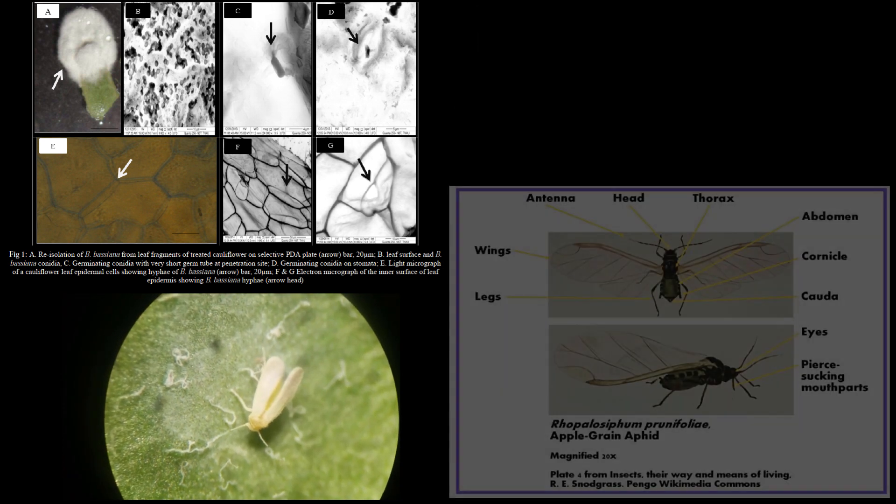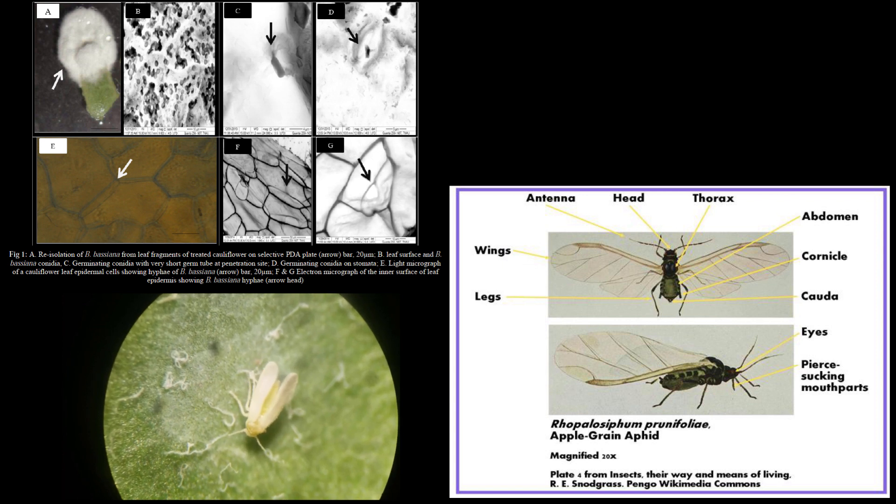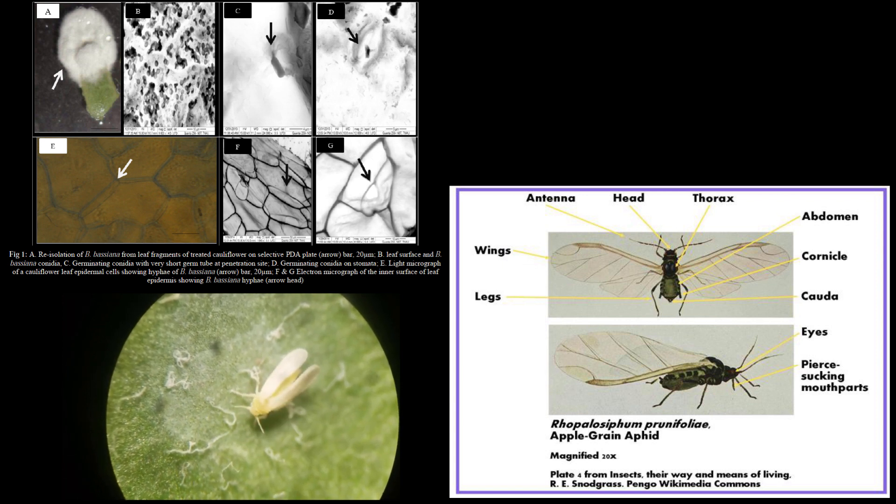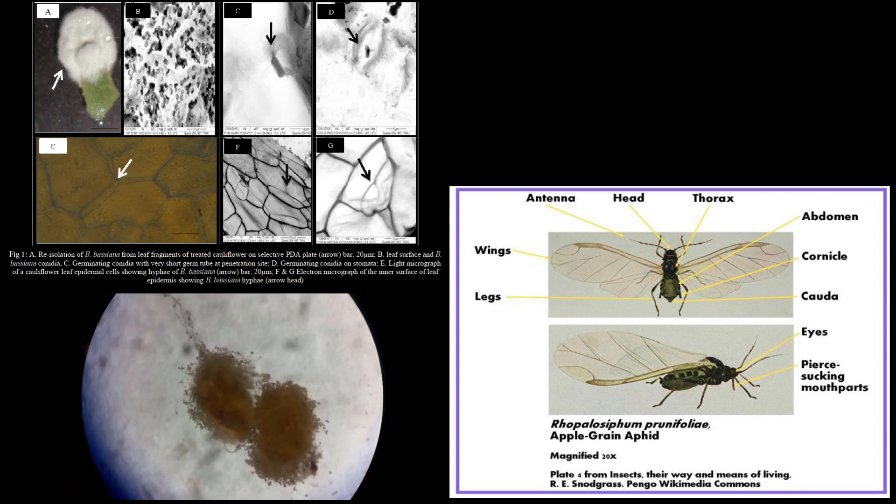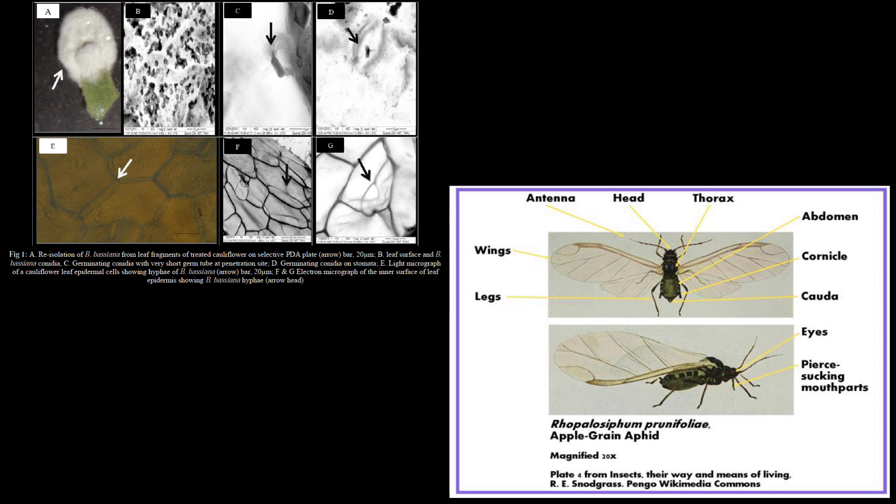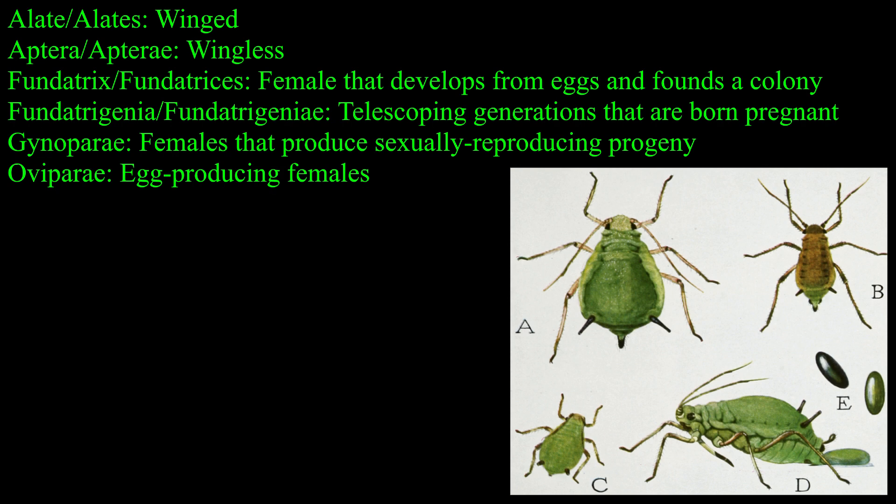Important features that identify an aphid include abdominal structures called cornicles, which can either be tubular and long, or reduced to porous openings, but important defensive secretions are exuded from them, such as wax or volatile compounds, which can signal others. They're also very commonly bulbous and congregate closely together.